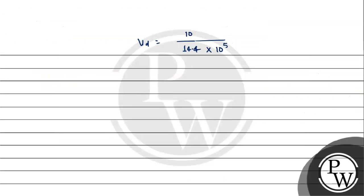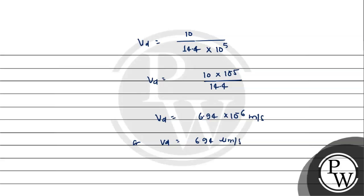तो 10 to the power 5 बचने वाला है। VD लिखते हैं: 10 into 10 to the power minus 5 upon 14.4। Divide करने पर VD हो जाएगा 6.94 into 10 to the power minus 6 meter per second, यानी 6.94 micrometer per second।